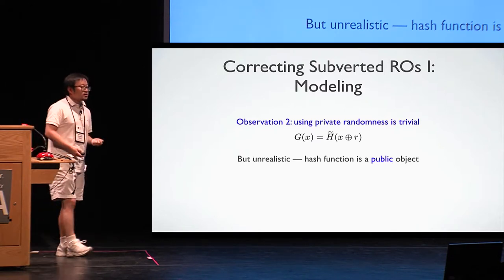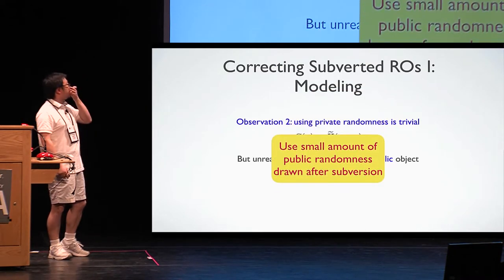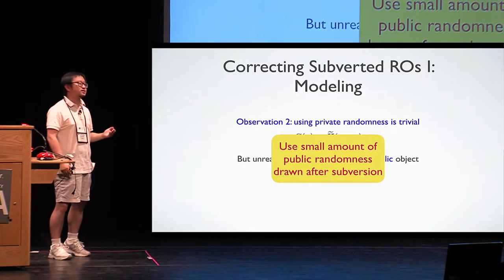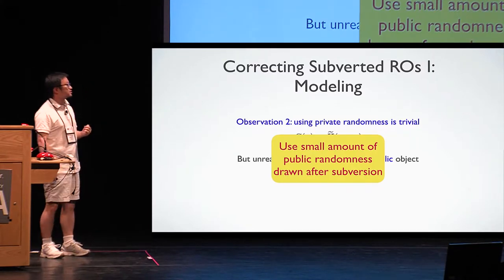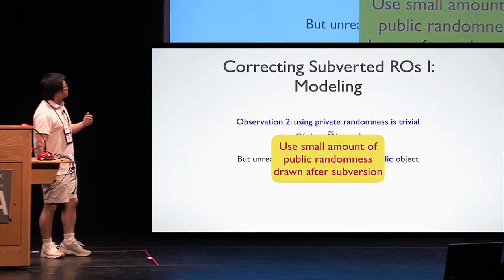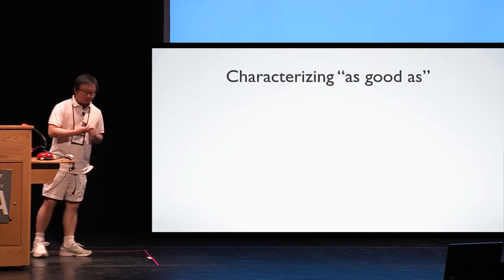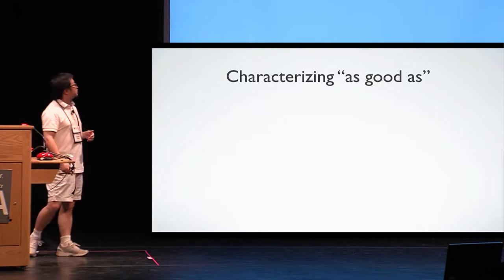So what do we learn here? It seems the only choice we have is to use some small amount of public randomness. And this public randomness is chosen after the implementation is provided.